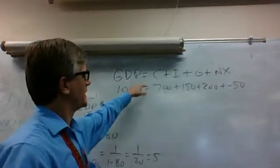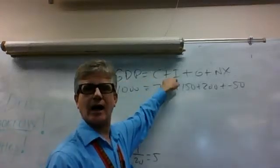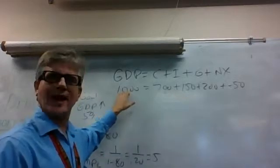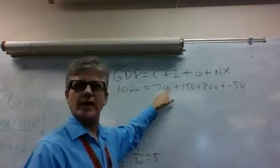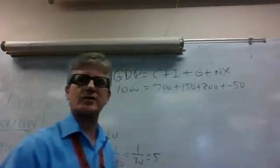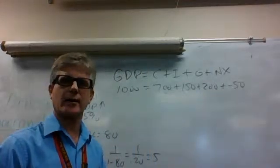Our formula is GDP equals C plus I plus G plus NX, and then we've got our $1,000 equals 700 plus 150 plus 200 minus 50. So that's our base formula that we're using, the regular numbers, the easy numbers.